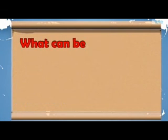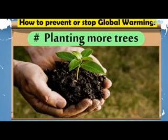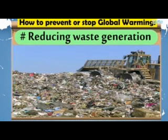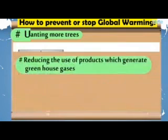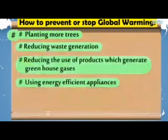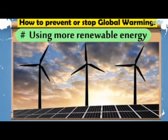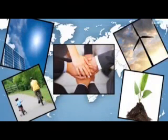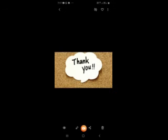But what can be done by us? How can we contribute to reducing global warming and its consequences? We can plant more trees, reduce waste generation, reduce the use of products which generate greenhouse gases, use energy-efficient appliances, increase the fuel efficiency of vehicles, and use more renewable energy — switching to greener alternatives which cause less harm to our environment. That's all for today. I hope you found this session very informative and gained thorough knowledge of what global warming is. Thank you and have a nice day.